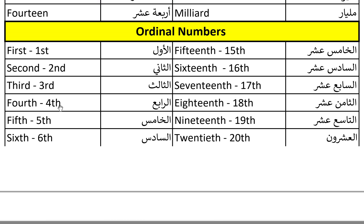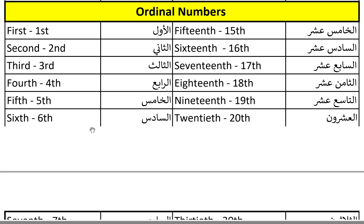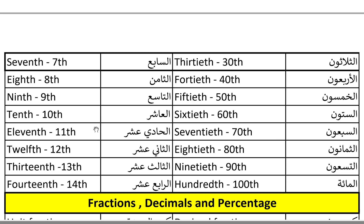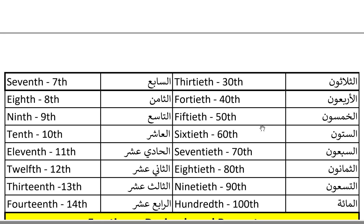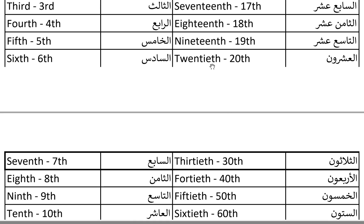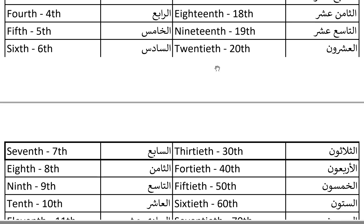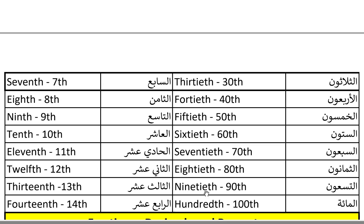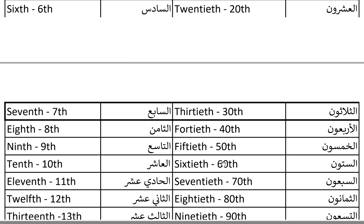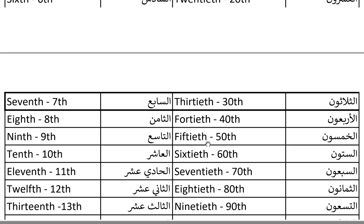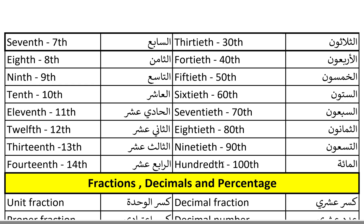We write 'th' in the number so we can explain the abbreviation. When we start from the 20th, we notice that the 'y' in twenty becomes 'i' — so twenty becomes twentieth, written as 20th. Forty becomes fortieth, and so on. For multiples of 10, the 'y' changes to 'ieth' — 20th, 30th, 40th, and so on.